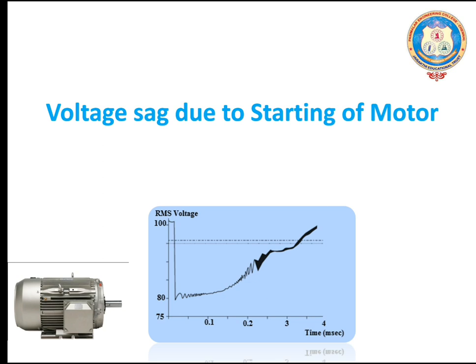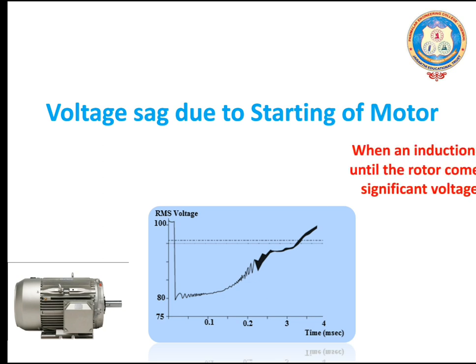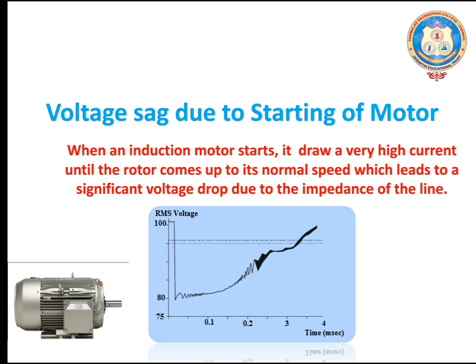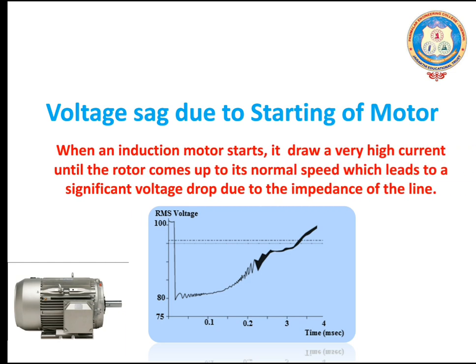How does Voltage Sag occur due to starting of a motor? When an induction motor starts, it draws a very high current until the rotor comes up to its normal speed, which will lead to a significant voltage drop due to the impedance in the line.